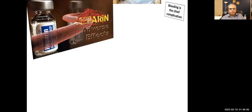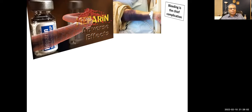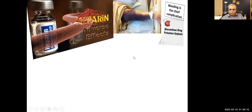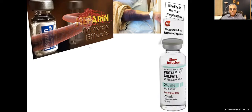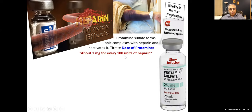Adverse effects: bleeding is the chief complication. The most dreaded complication is intracerebral hemorrhage for high-risk patients. If major bleeding occurs, you must discontinue heparin and initiate protamine sulfate, which forms ionic complexes with heparin. Titrate the dose — approximately 1 mg for every 100 units of heparin administered. Excessive protamine dose may worsen bleeding; protamine sulfate is itself a weak anticoagulant.